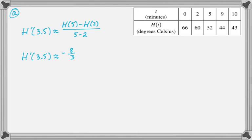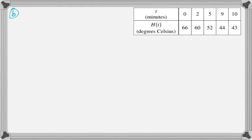Units of this are the same as the units of H(t) divided by the units of t. So that would be degrees Celsius per minute. So it didn't actually say to put the units on it, but I think it's always a good idea to do that.